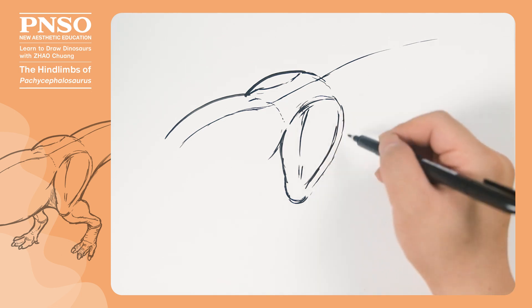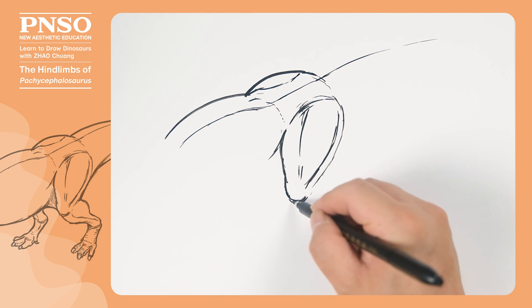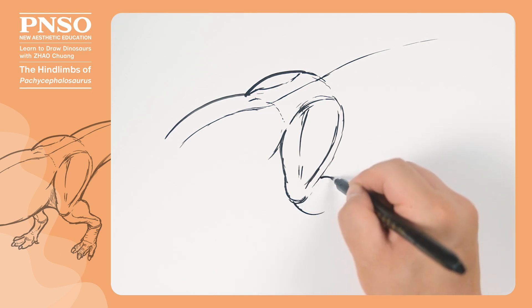The calves of Pachycephalosaurus were relatively long. Looking down from the top, we can clearly see that it has a set of plump muscles on the side, and the root of this muscle is connected to the heel.